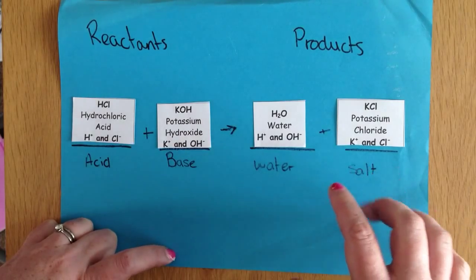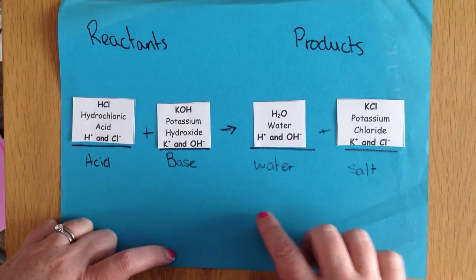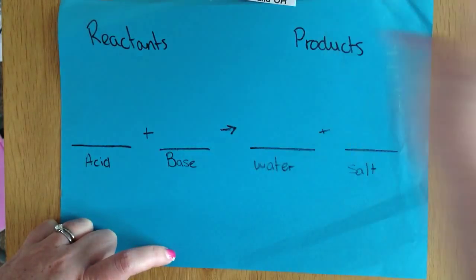Pop those together and they're going to make potassium chloride. I'll do you a whole other video on how to name things, this is just how to work out what the products are. So we pop those to one side.